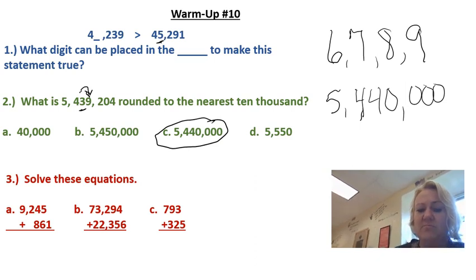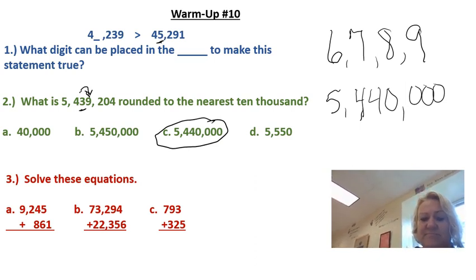And the last problem, number three, let's add those together. Five plus one is six. Four plus six is 10. I put my zero down. I carry my one and I circle my one. One plus two is three. I'm done with that. I'm going to cross it out.